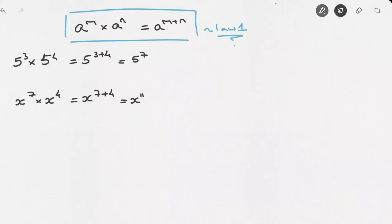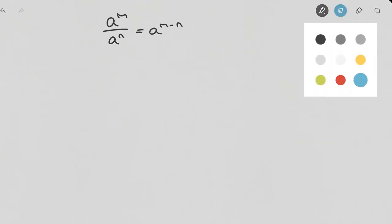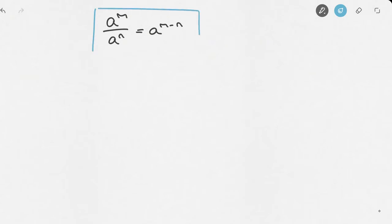Let's look at the second one. If we're given a nonzero number a and consider a raised to the power of m divided by a to the power of n, the second law of exponents tells us that this equals a raised to the power of m minus n. I'll box this result and call it Law 2.